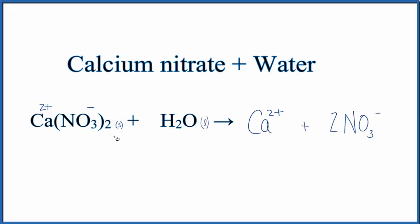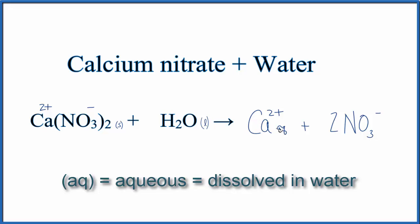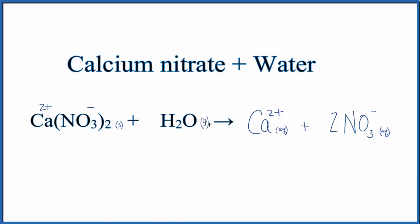Because we put the solid into the liquid and it dissolved, we can say it dissolved in water. And to show that, we write AQ after the calcium. That means aqueous, or it dissolved in water. Do the same for the nitrates. And now, since it is dissolved in water, each of these are dissolved in water, I don't have to write liquid water on this side of the equation.